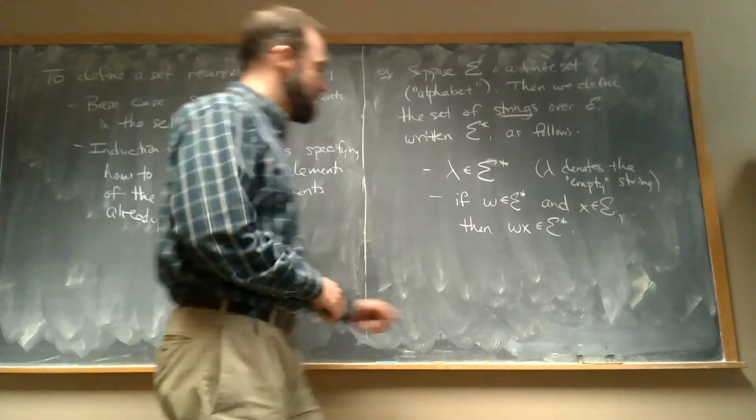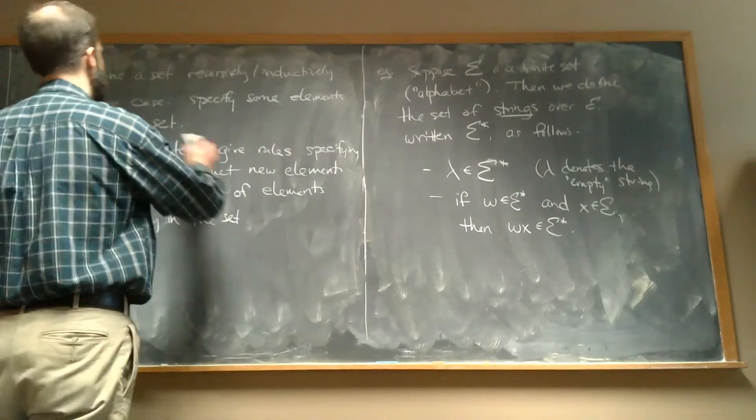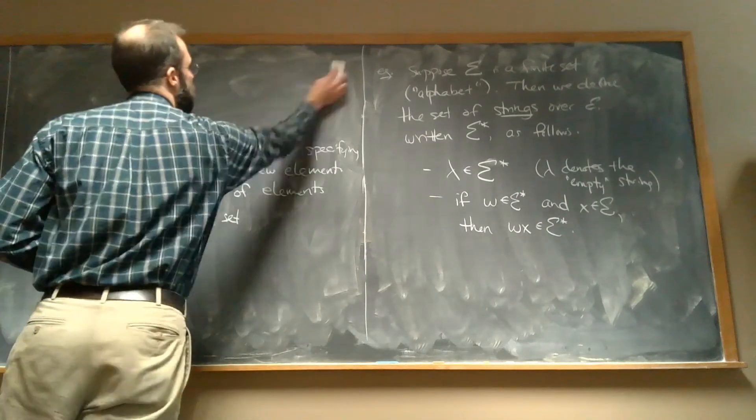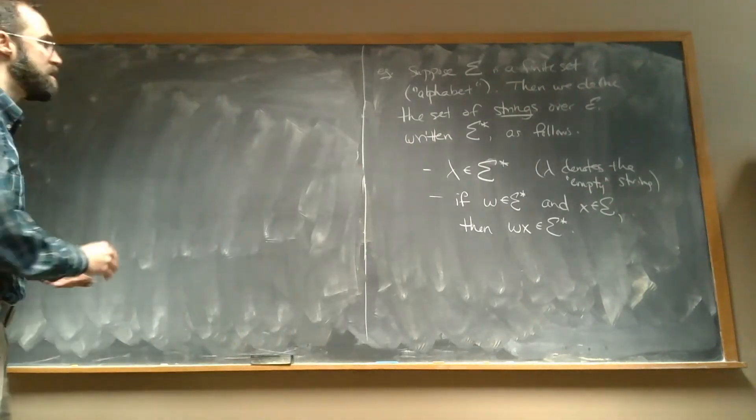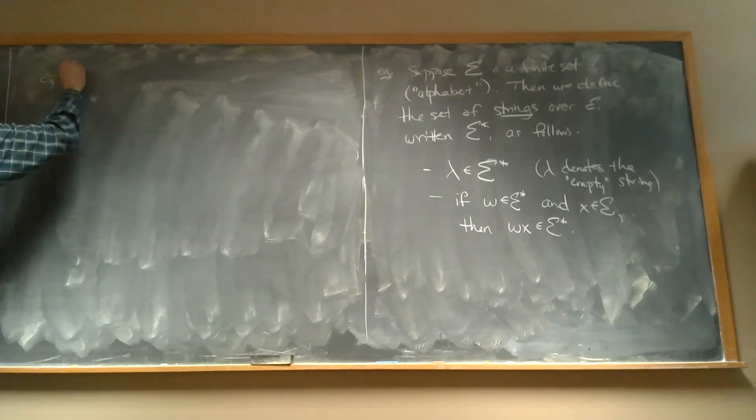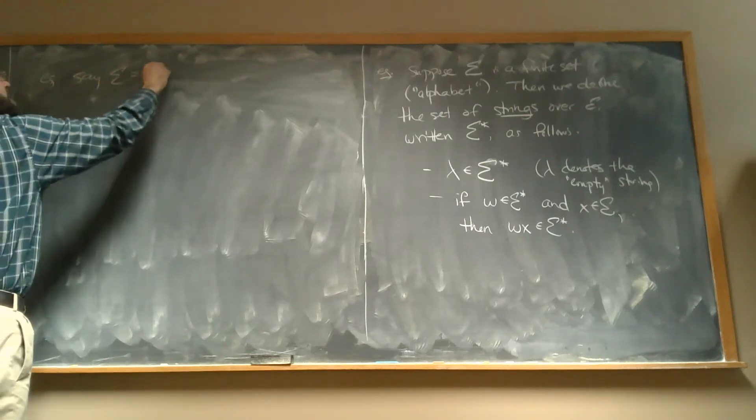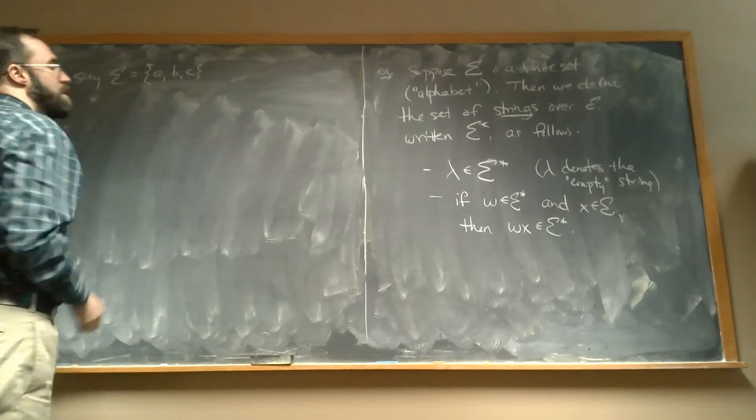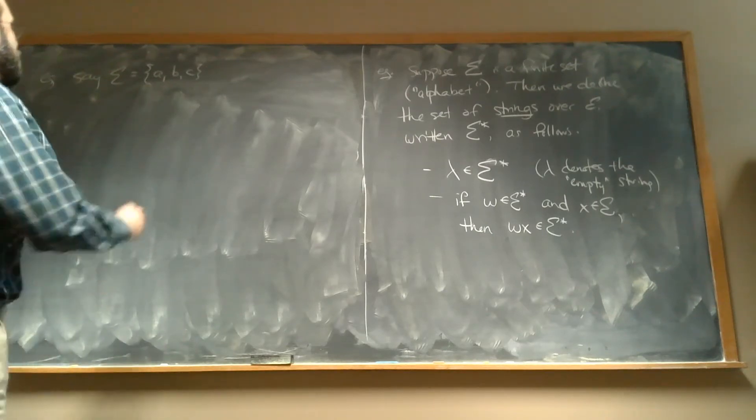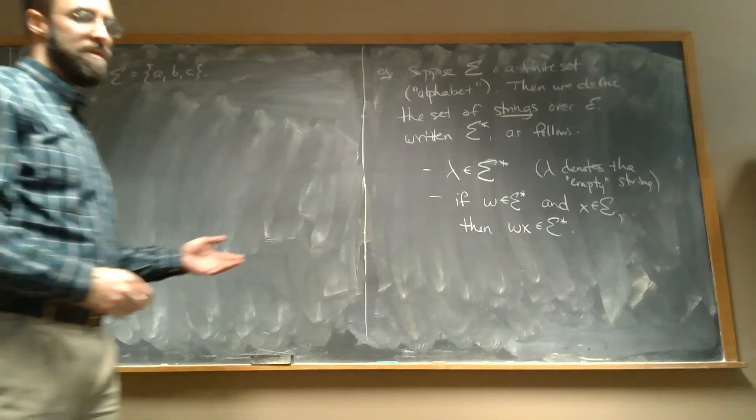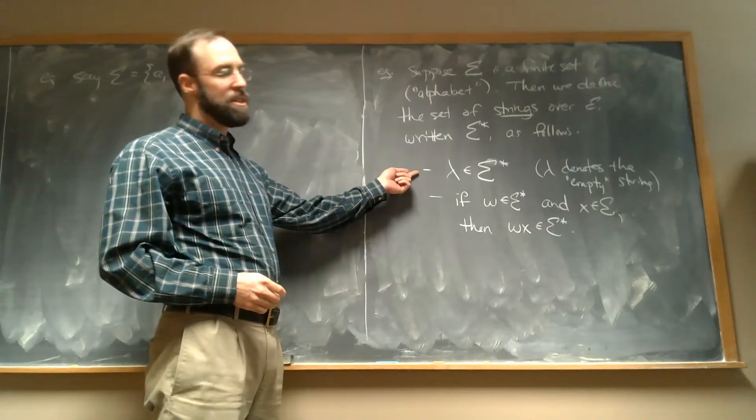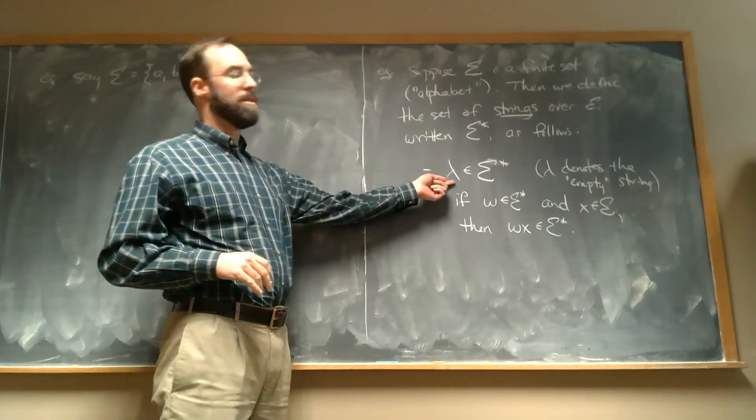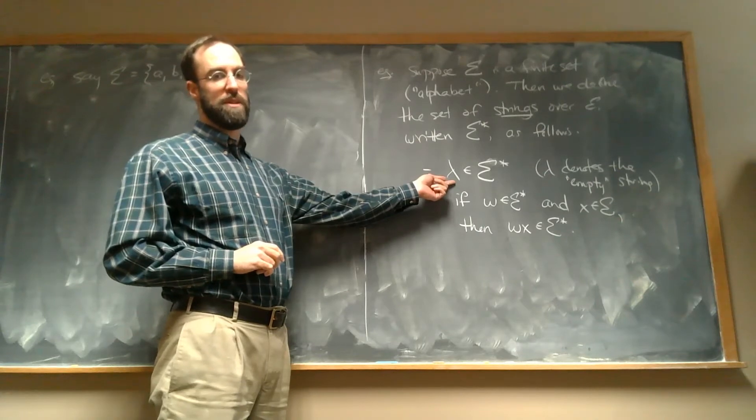And we can keep doing this. Let's actually do a concrete example of this, to see how this works. For example, we can say our alphabet is the set A, B, C. The way I like to think of this is kind of happening in stages. This is like stage zero, is when we just start out with whatever we specified as the base case.